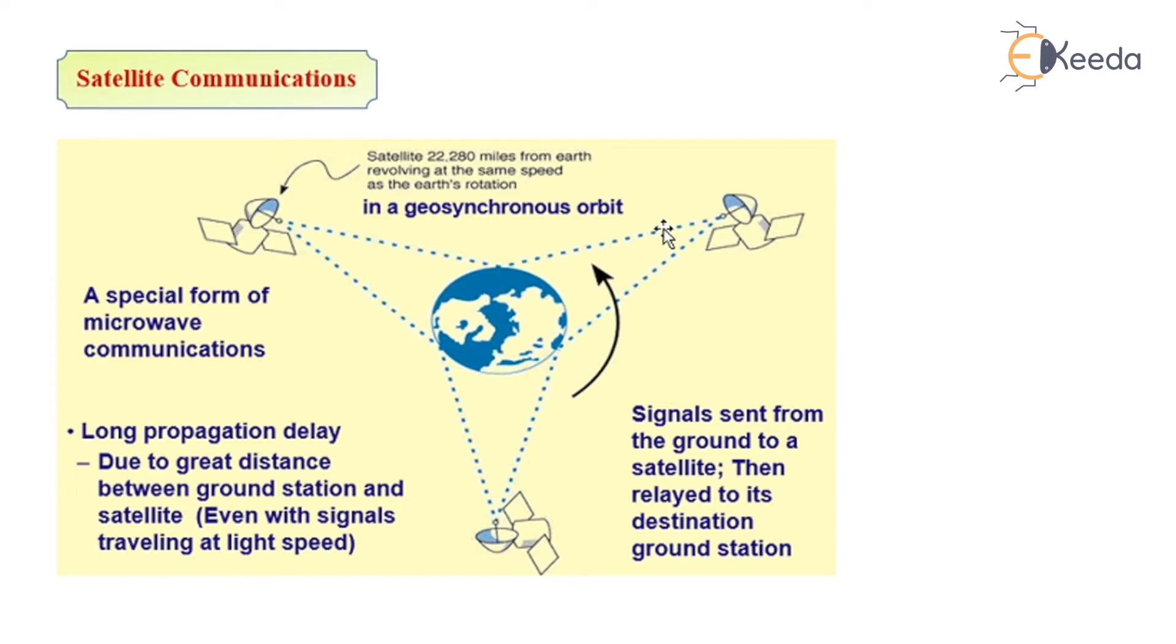Example of this kind of communication is satellite technology, where the information is captured from the earth. Signals are sent from the ground to the satellite, then it is relayed to the destination ground station.